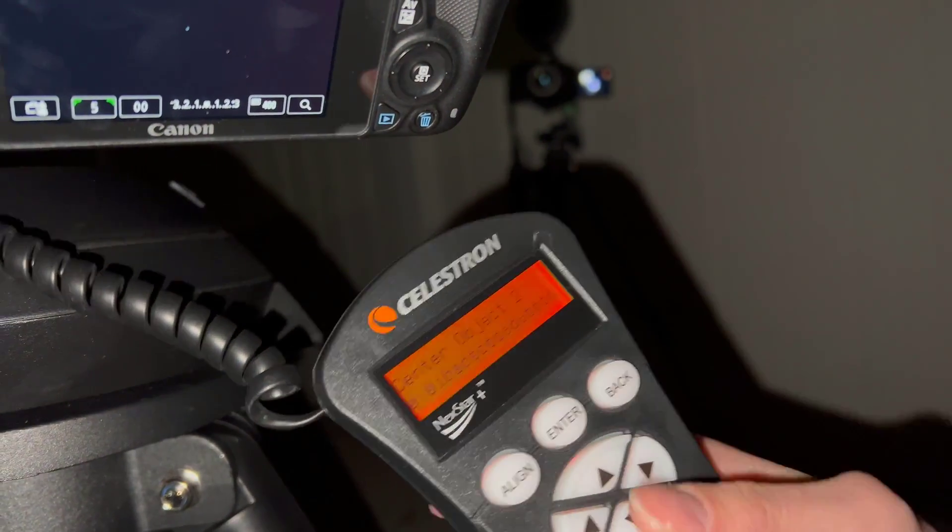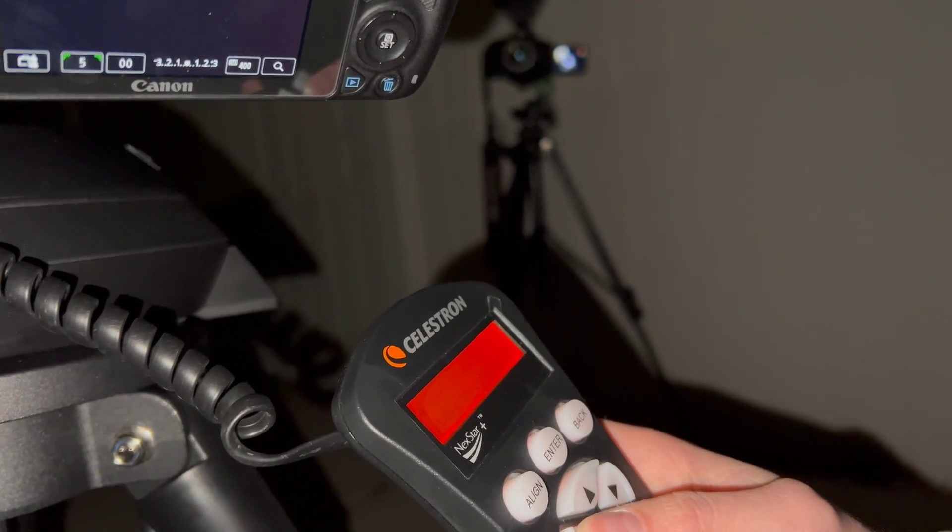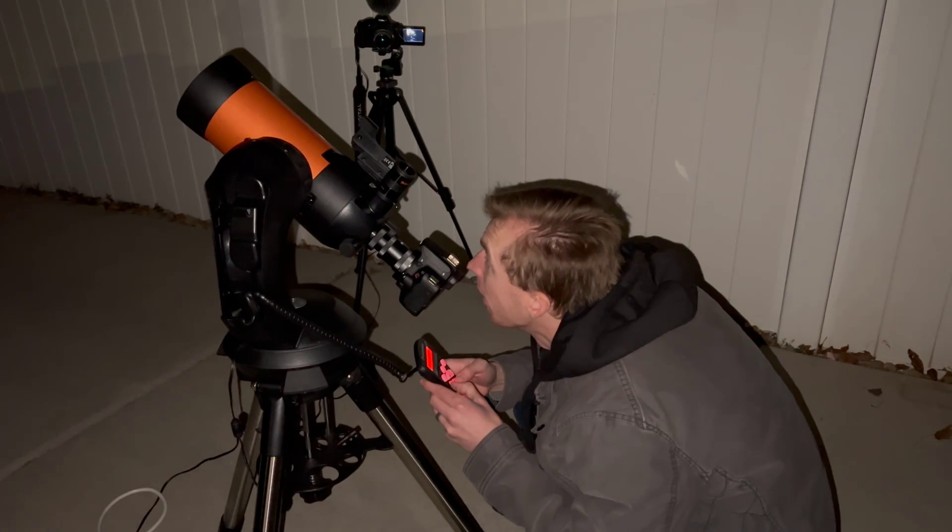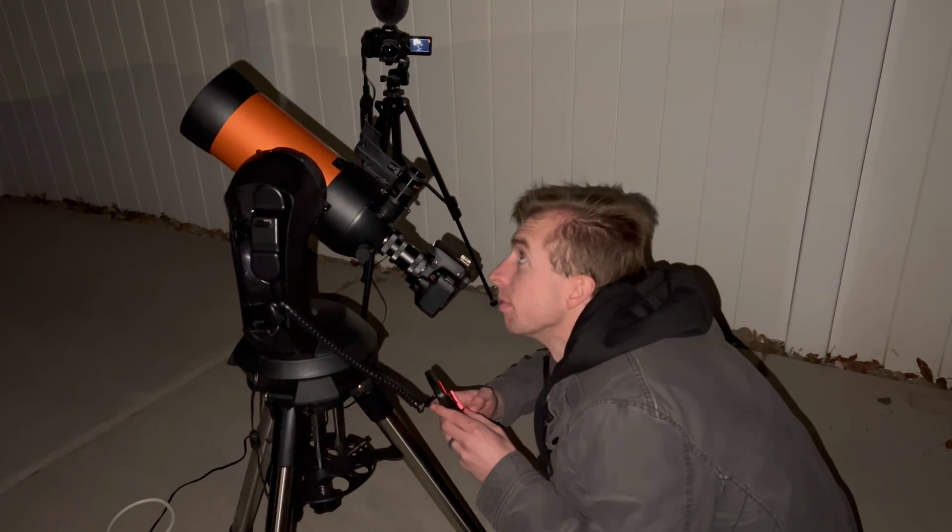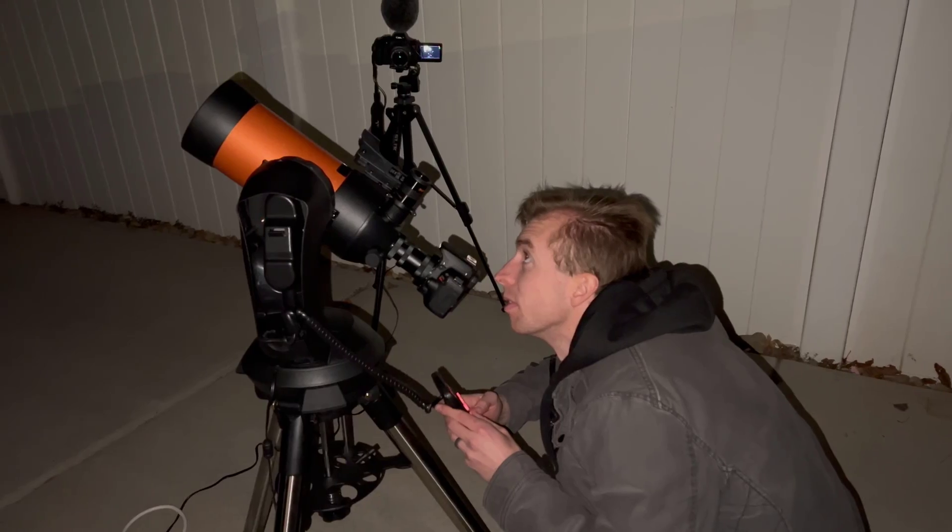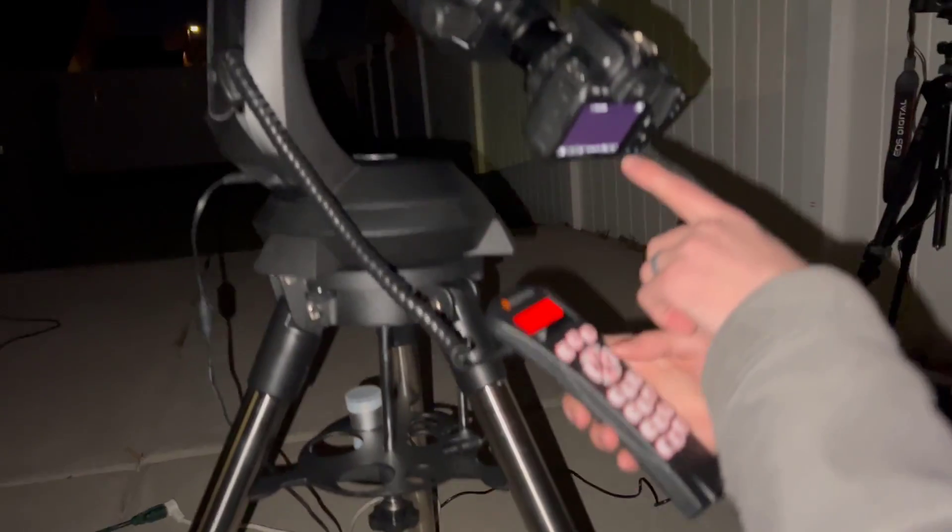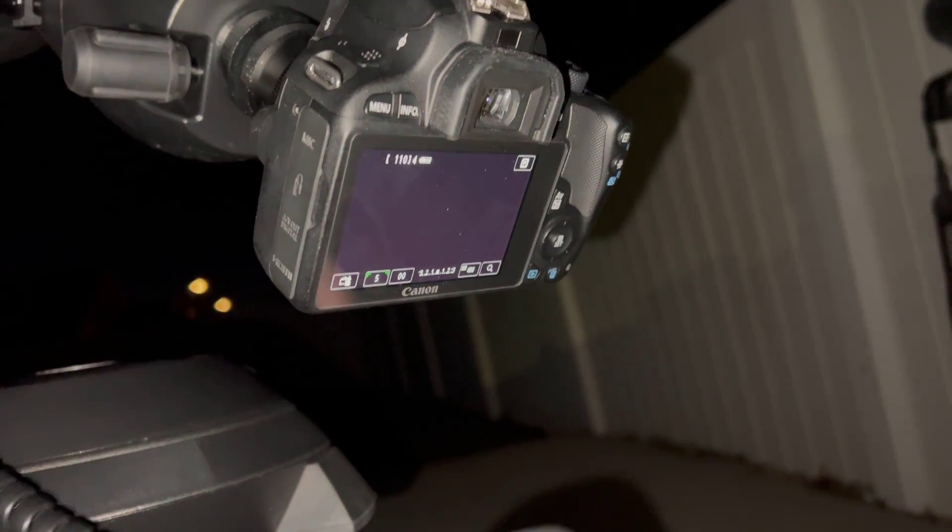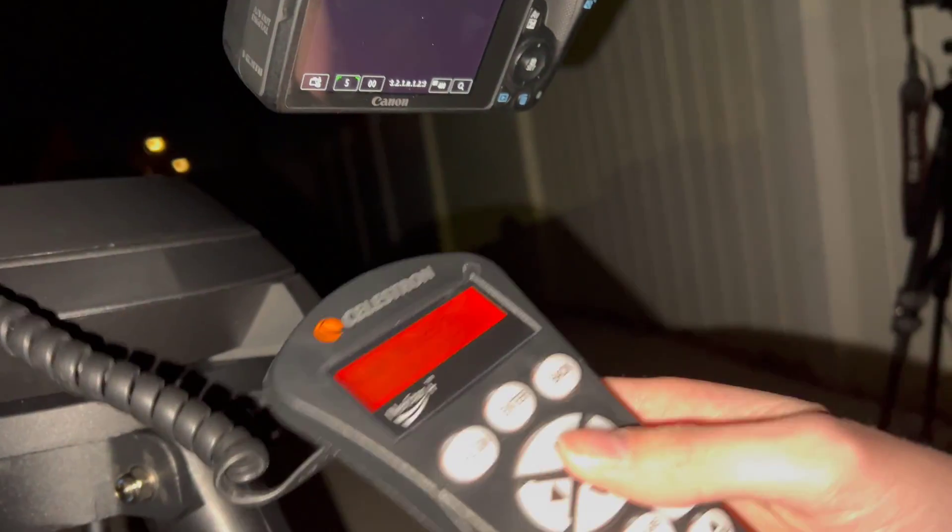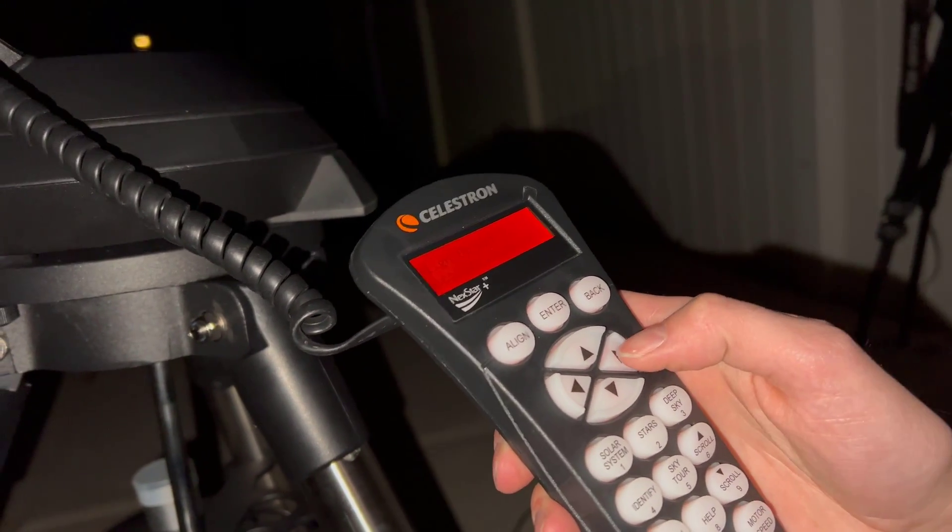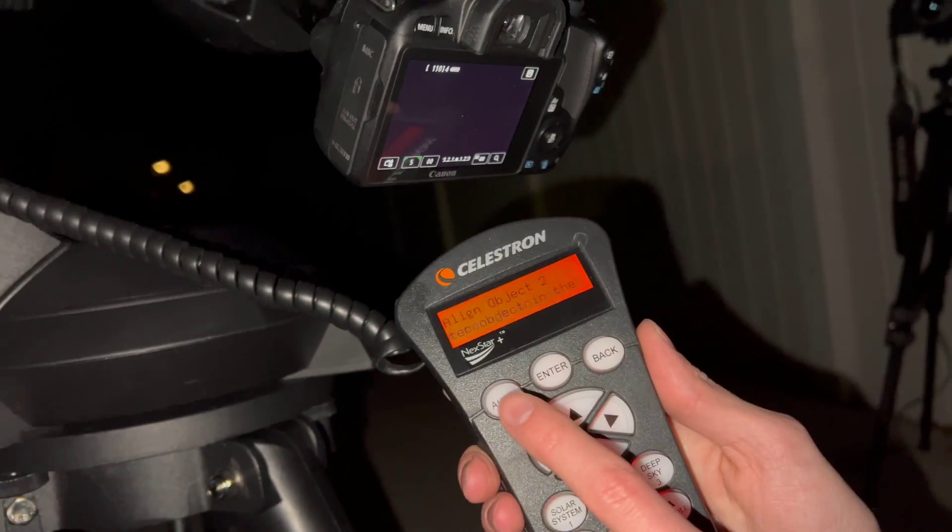And then it's going to ask me to go to the second object. So now, I'm going to slew over to Altair and use my finder. All right. And just like that, now you can see Altair is on my screen. So I'm going to hit center object two. I'm going to hit enter. And now it's going to ask me to align. So we'll get it nice and centered. Okay. That's pretty much in the center. So now I'm going to tap align.